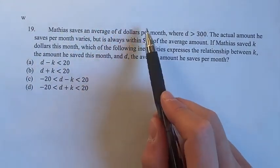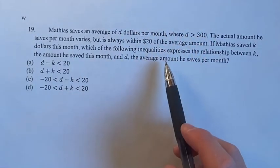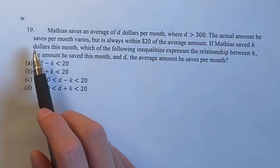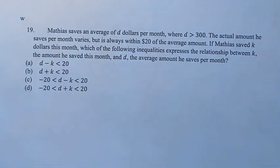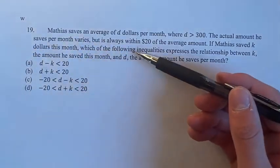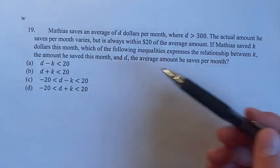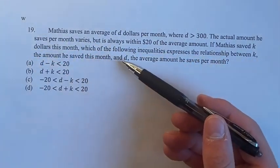we're told that Matthias saves an average of D dollars per month, where D is greater than 300. The actual amount that he saves varies, but is always within $20 of the average amount. So if he saved K dollars this month, which of the following inequalities expresses the relationship between K, the amount he saved this month, and D, the average amount?